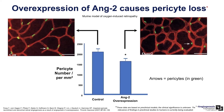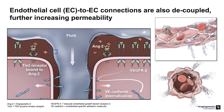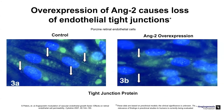Increased ANG2 levels drive a decrease in pericyte coverage of endothelial cells. The endothelial cell-to-cell connections are also decoupled in the presence of increased ANG2, leading to increased permeability. In a preclinical model of porcine retinal endothelial cells, there is a dramatic reduction in cell-to-cell tight junctions—highlighted by white arrows in the control baseline state—with ANG2 overexpression.